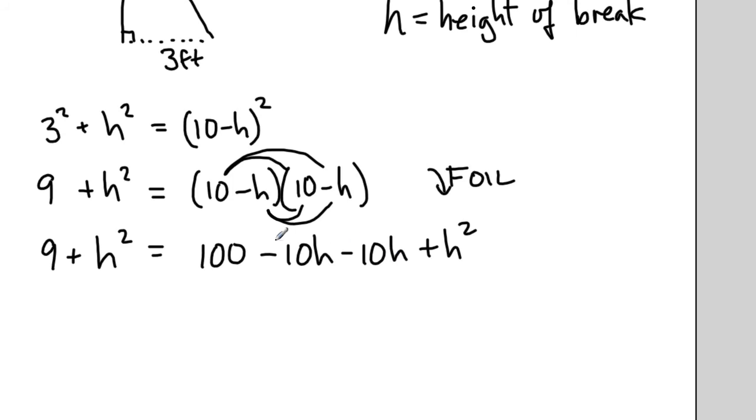I still want to solve for h, so I'm going to simplify, collect like terms. Now we have 9 plus h squared equals 100 minus 20h plus h squared. Those are like terms. And then the really fortunate, lucky thing here is that in this particular problem, you're going to have an h squared on both sides of the equation.